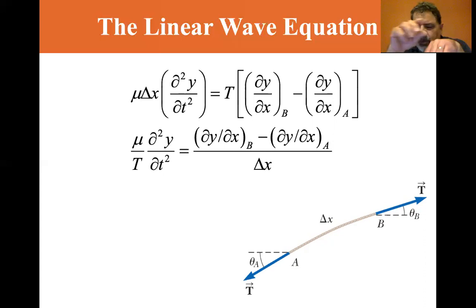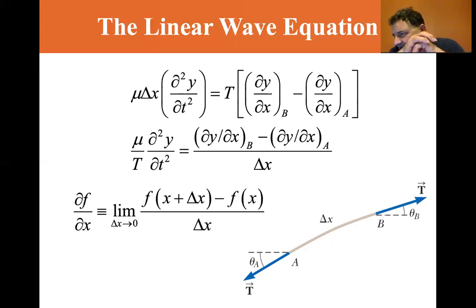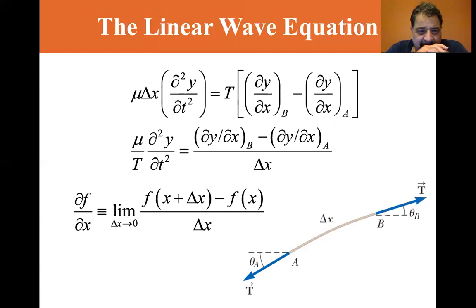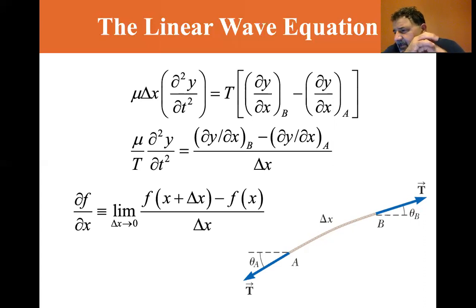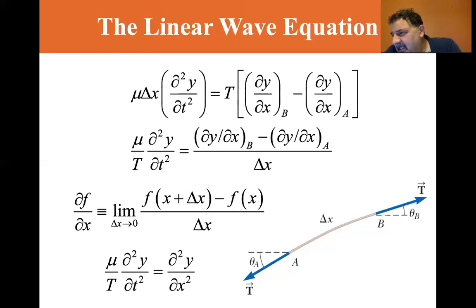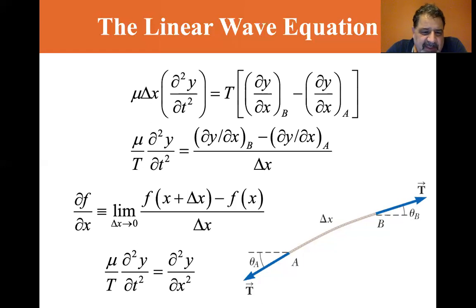The right side of the equation can be expressed differently. We note that the partial derivative is defined as the limit as Δx approaches zero of [f(x+Δx) minus f(x)] divided by Δx — that's just the definition of a derivative. Associating f(x+Δx) with (∂y/∂x)_B and f(x) with (∂y/∂x)_A, in the limit as Δx approaches zero, the equation becomes (μ/T) times the second partial of y with respect to t equals the second partial of y with respect to x.